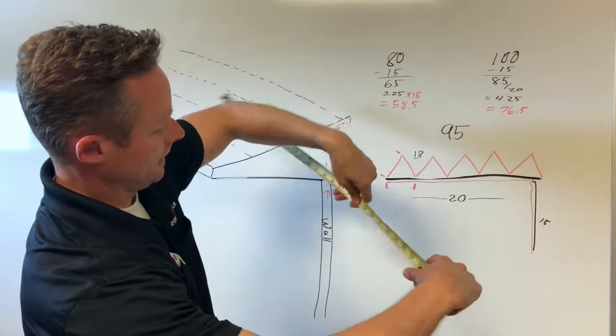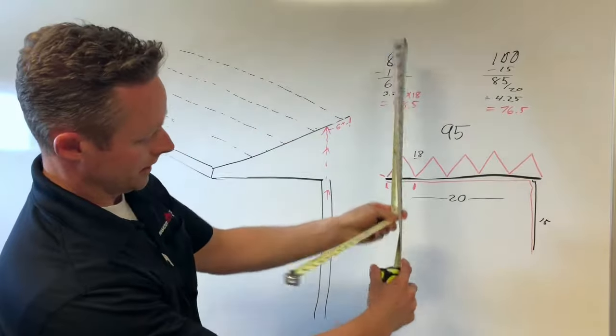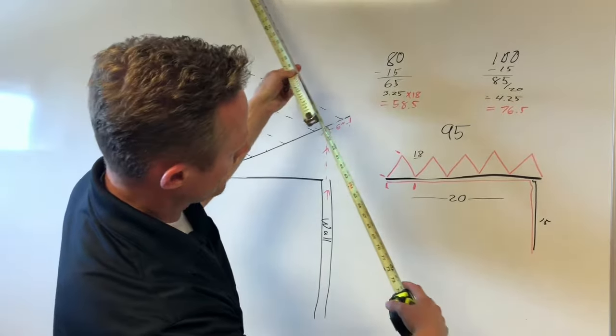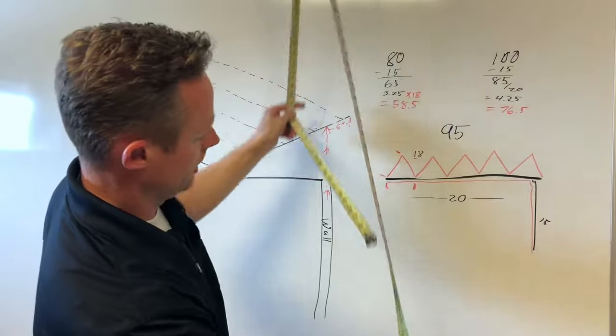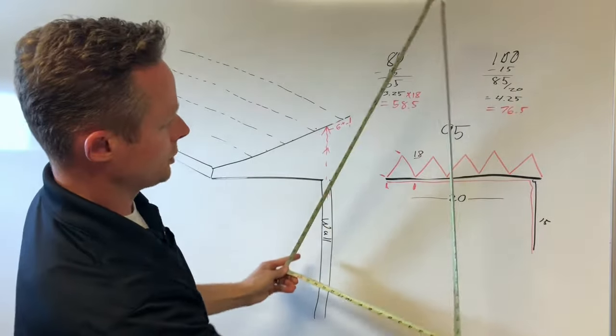Now we're going to take that and we go 18 and now we're going to pull our tape out and go all the way to 76.5. Now look at that triangle.